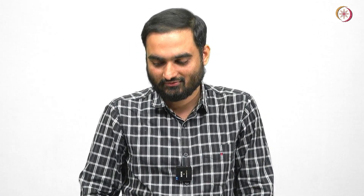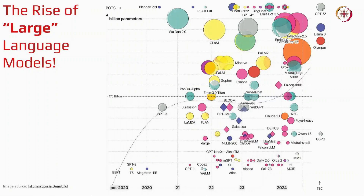We knowingly or unknowingly use language models in our daily life. For example, when we write a query on Google search, when we translate one language to another language, when we use assisted technology like Alexa — we use language models in all these cases. In 2017, a breakthrough happened and a model called transformer was introduced, and then we heard a new term called large language models.